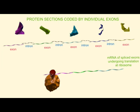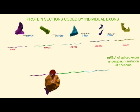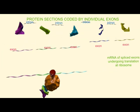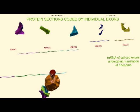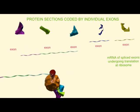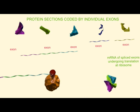A different set of exons, which are united to form an mRNA, would result in different sections of the protein once the mRNA is translated.